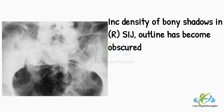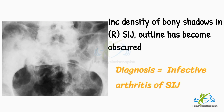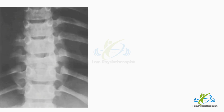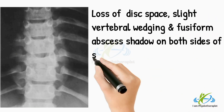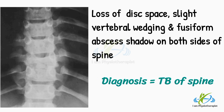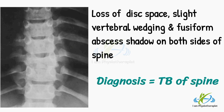In this radiograph, there is increased density of the bony shadows in the region of the right sacroiliac joint, whose outline has become obscured. There was associated local pain, malaise, and pyrexia, and attempts to spring the sacroiliac joints produced great pain. Diagnosis: the appearances are typical of infective or pyogenic arthritis of the sacroiliac joint. This radiograph is of an 8-year-old boy complaining of back pain, malaise, night sweats, loss of spinal movements, and pain on percussion over the spine. There is loss of a disc space, slight vertebral wedging, and a fusiform abscess shadow on both sides of the spine. Diagnosis: the appearances are typical of tuberculosis of the spine.